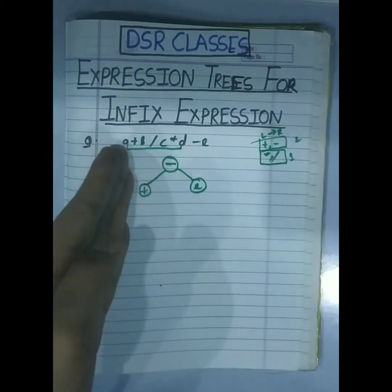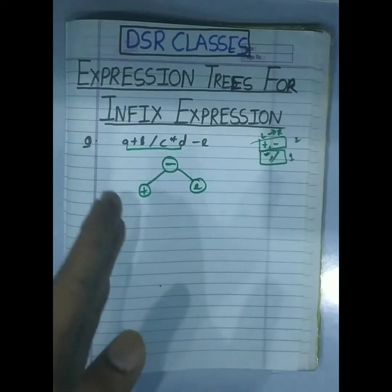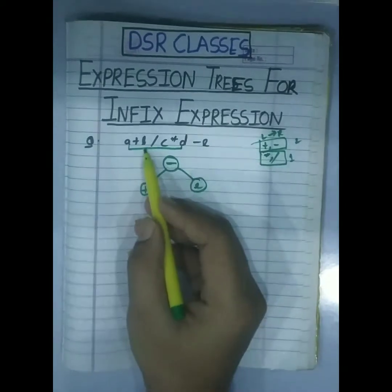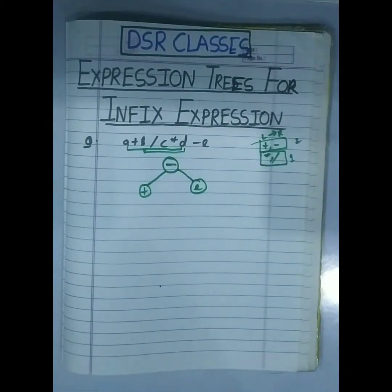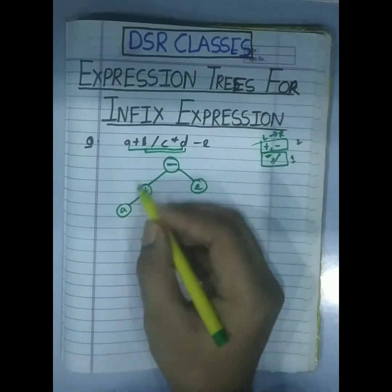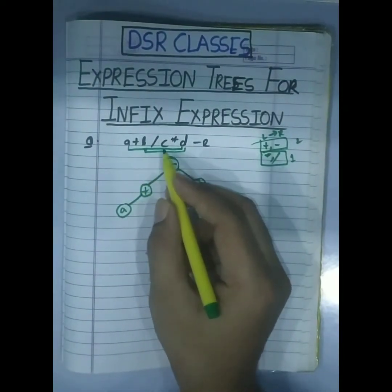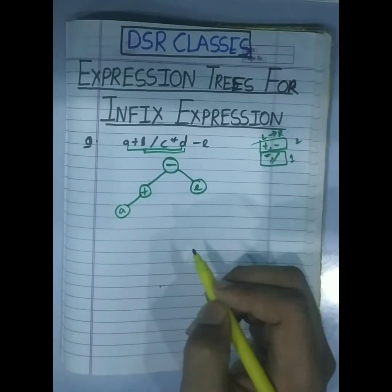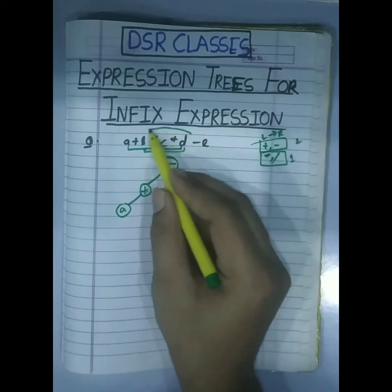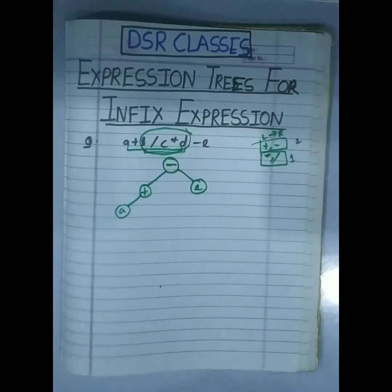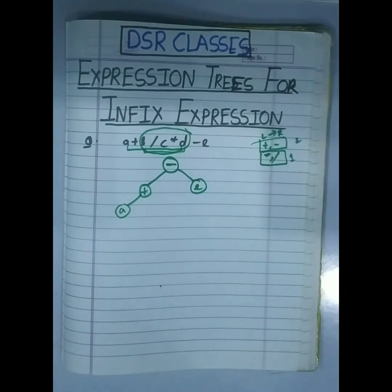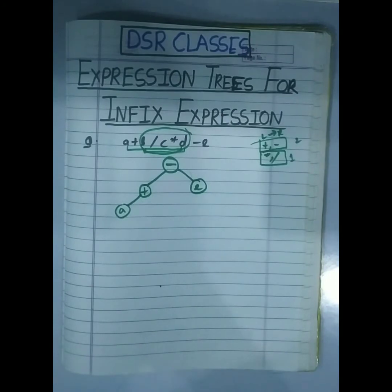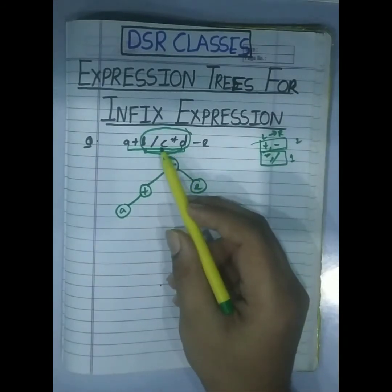So we write plus here. Plus to the left and plus to the right. Now going right we have b divided by c into d. I check the most small priority — in this case divide and multiply have the same priority.